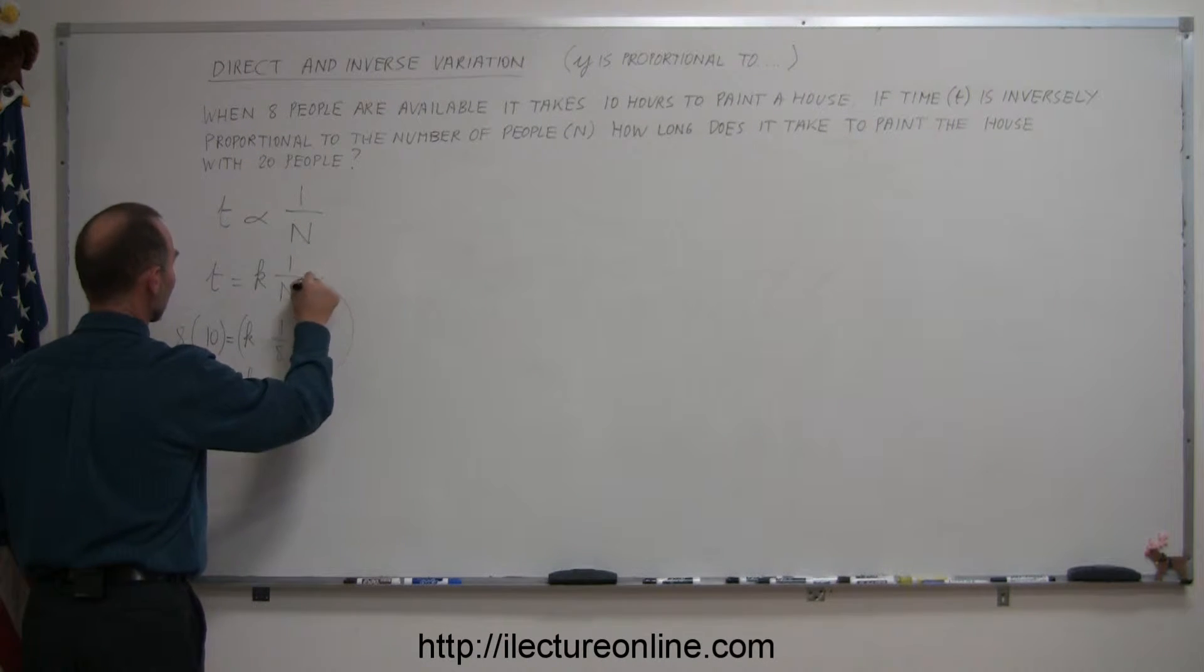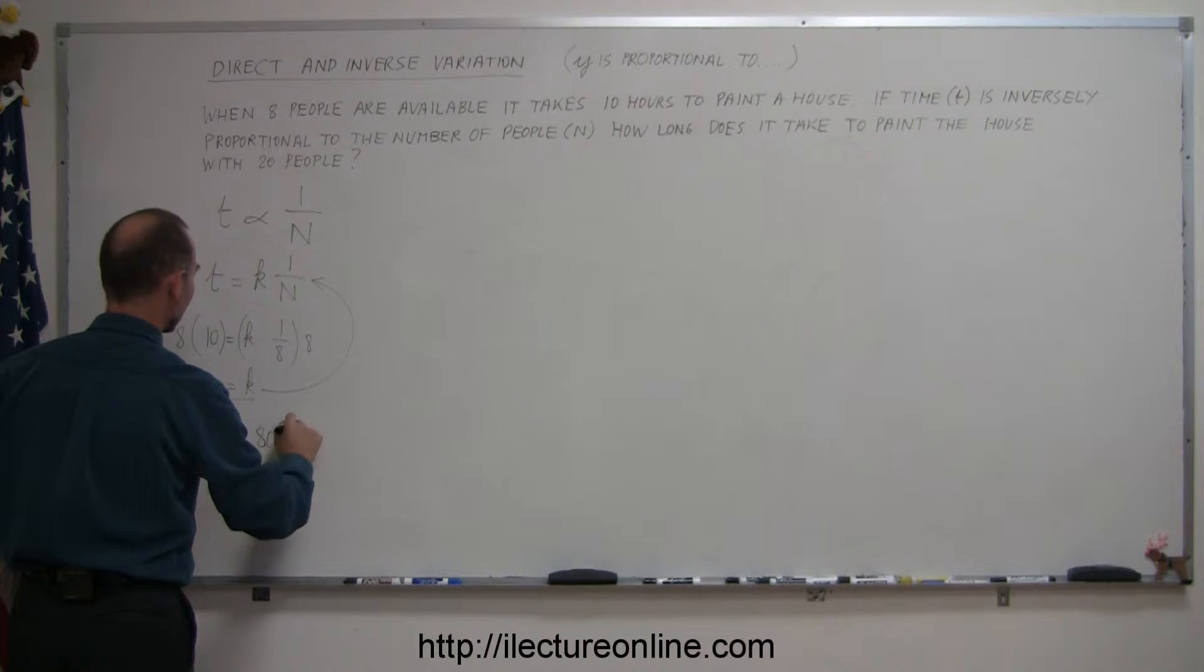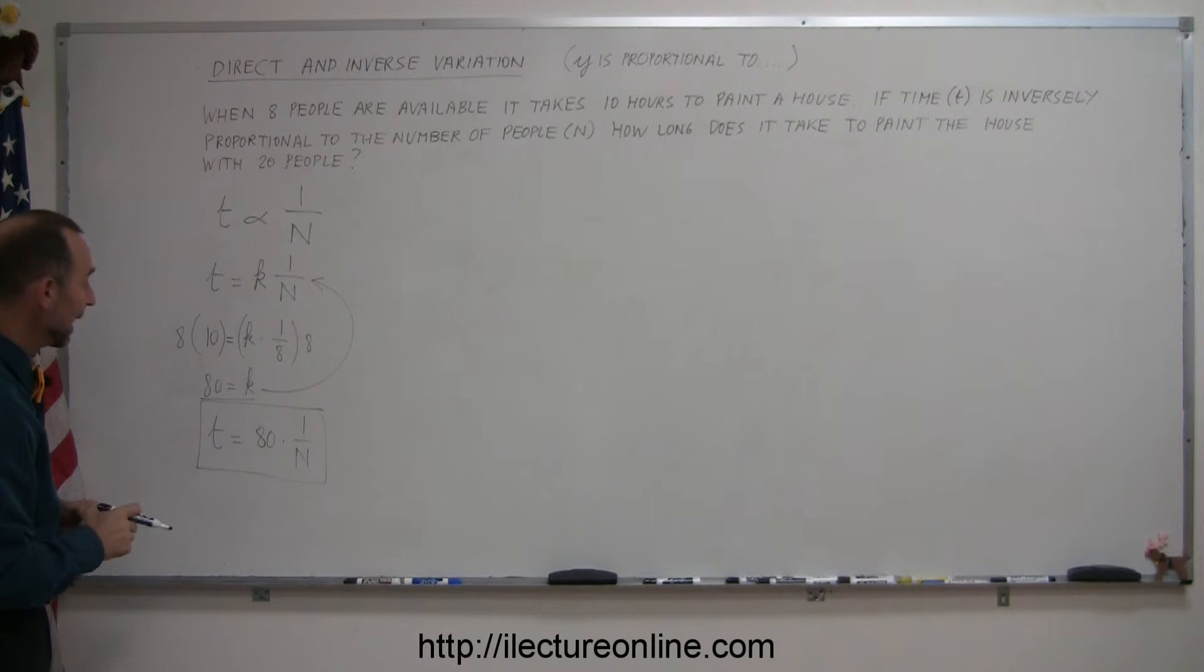And we plug that back into our equation so we can write that t is equal to 80 times 1 over n. There's our equation. That allows us to find the time that it takes to paint the house with any number of people.